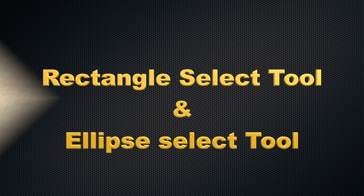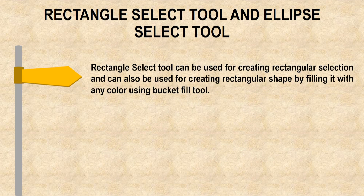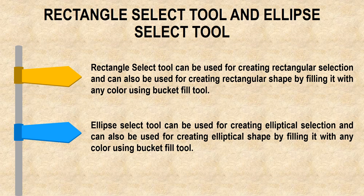Rectangle select tool and ellipse select tool. Rectangle select tool can be used for creating a rectangular selection and it can also be used for creating a rectangular shape by filling it with any specific color of your choice using the bucket fill tool. Similarly, ellipse select tool can be used for drawing an elliptical shape and further it can be filled by any specific color using the bucket fill tool.